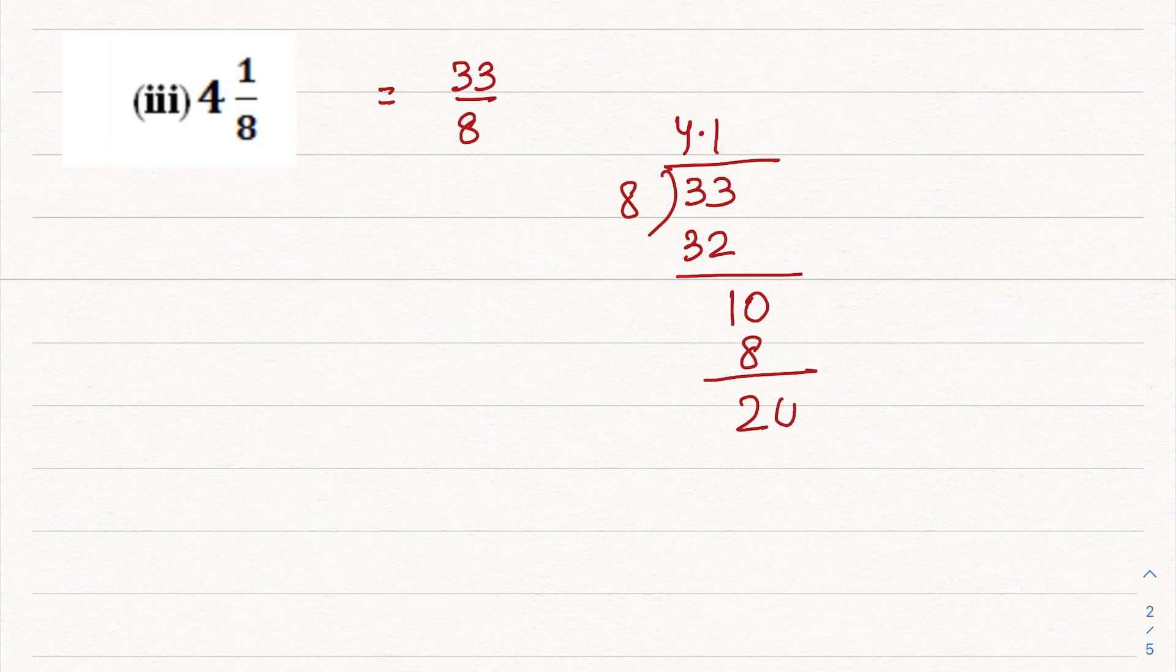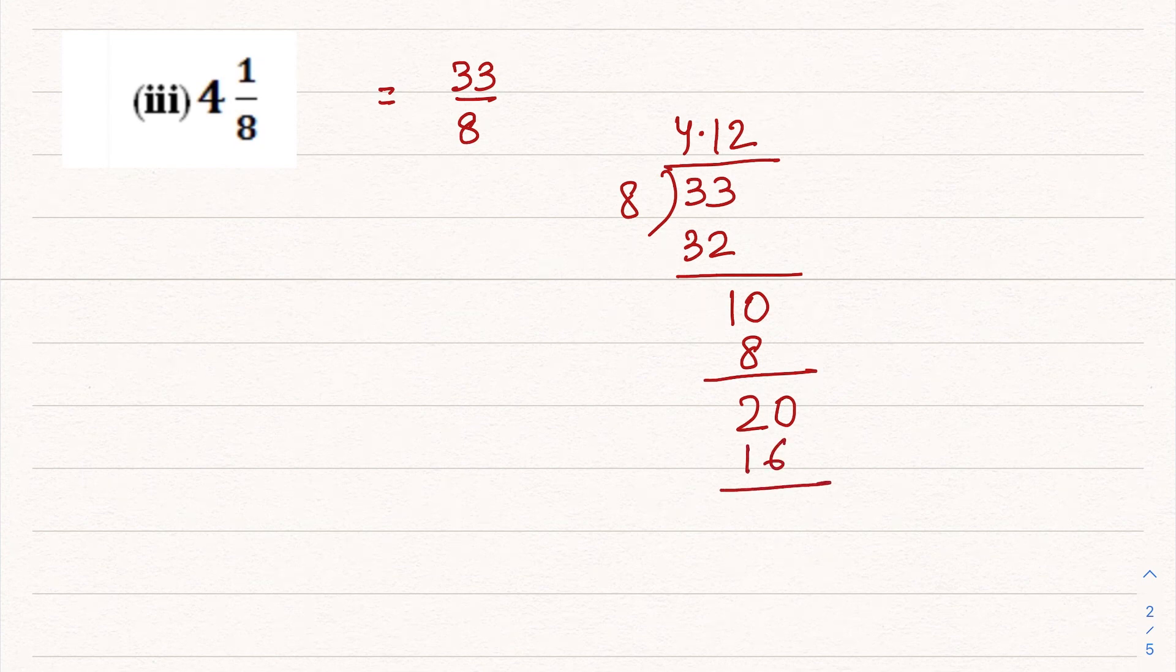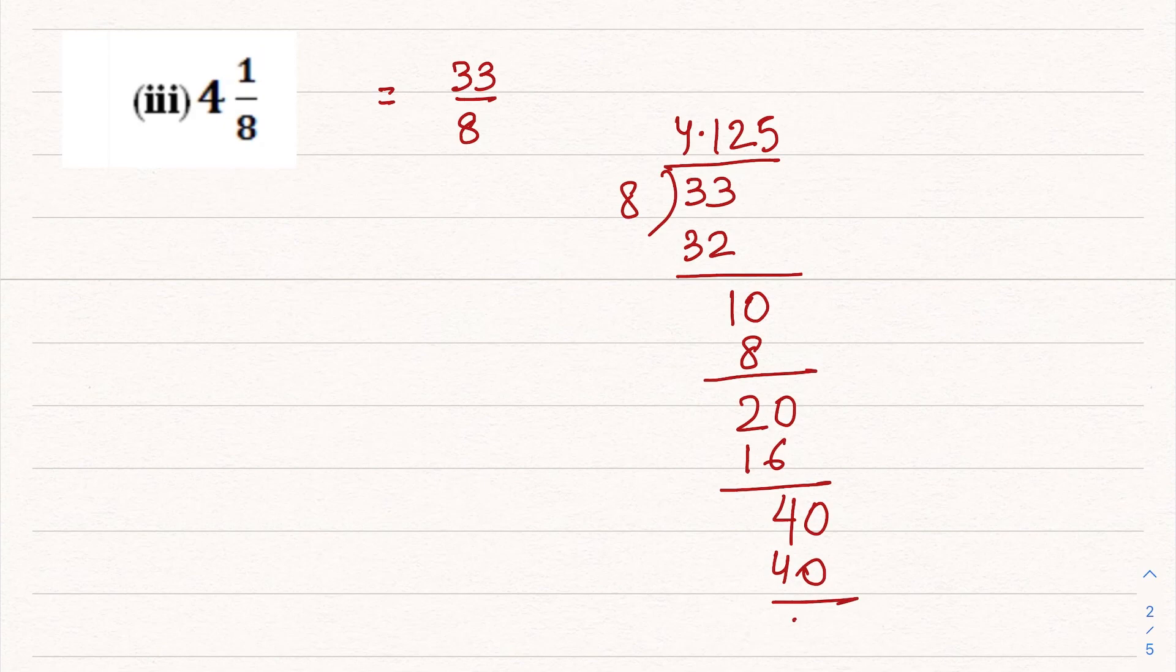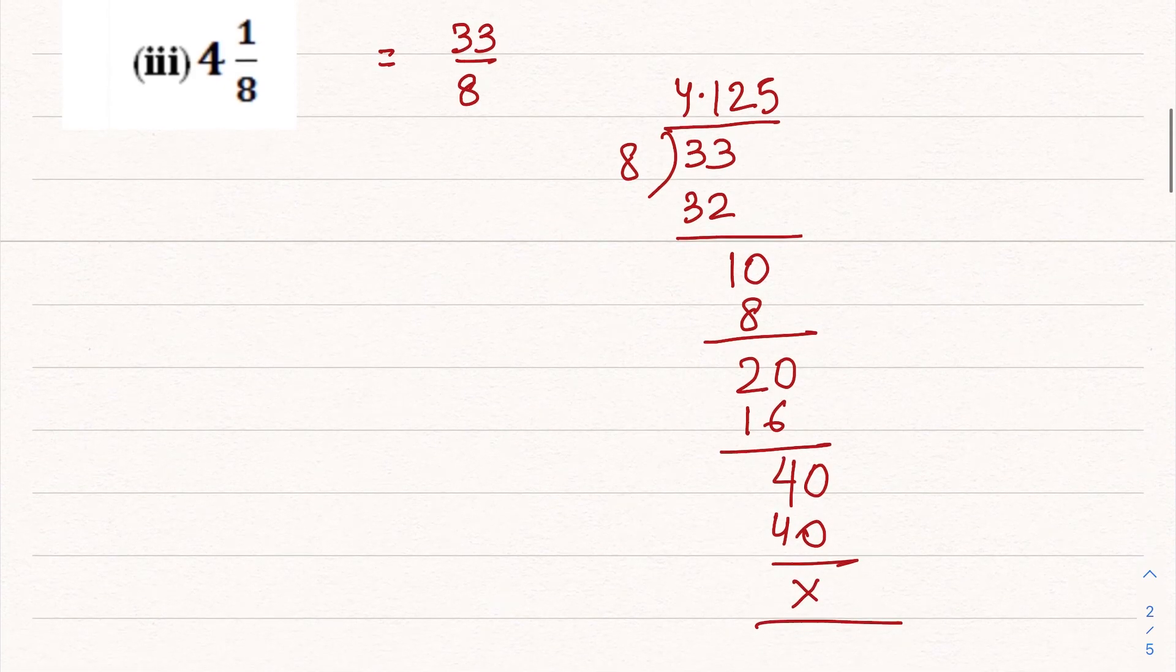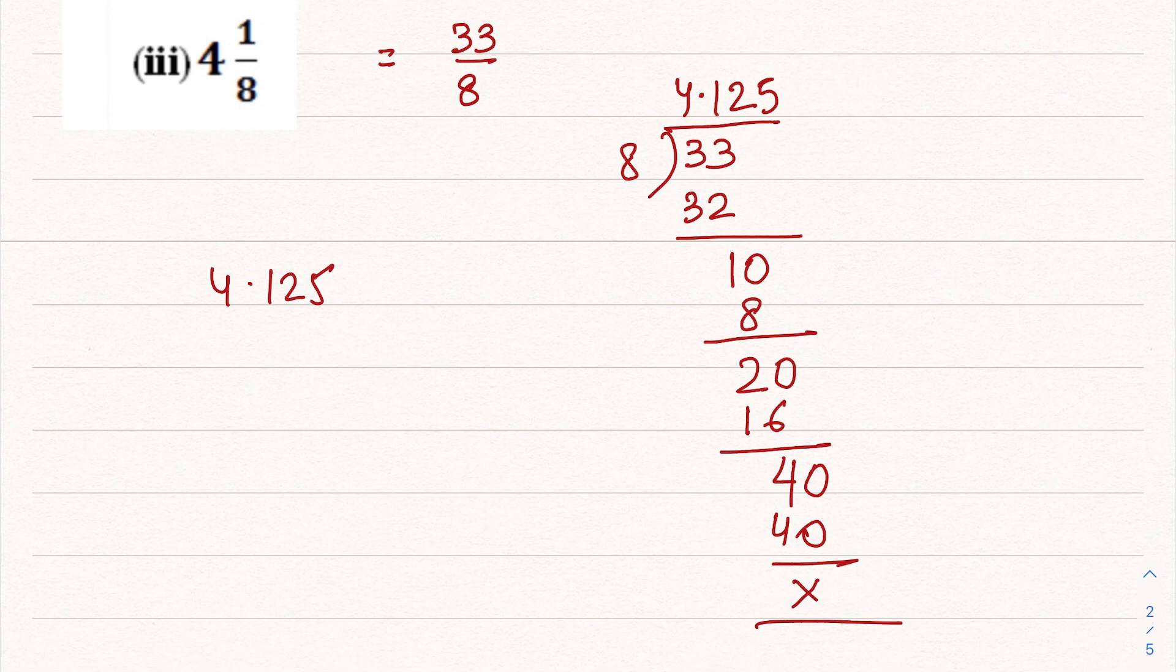We'll make it 20. Then 8 twos are 16, now the remainder is 4. We'll make it 40, and 8 fives are 40. The remainder has become 0. So the answer 4.125 is its decimal expansion, and this is terminating. This is a terminating decimal expansion.